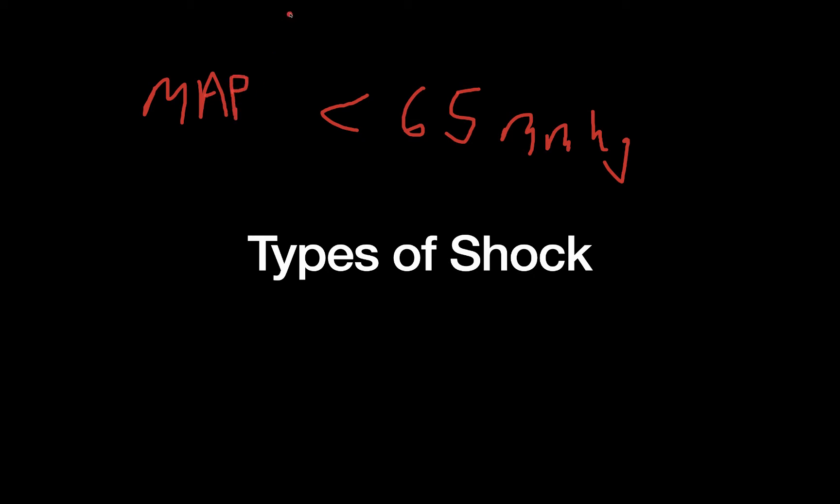Of course, a blood pressure is just a number and there are many physical findings and other findings we can measure that are related to shock, such as looking at urine output, which is indicative of renal dysfunction. If your patient has altered mental status, they might not be perfusing their cerebrum very well, et cetera.